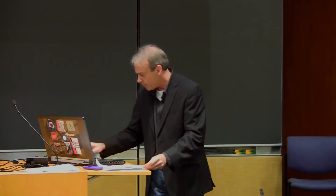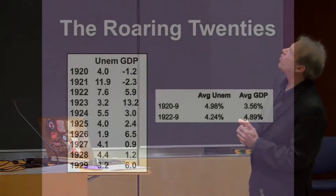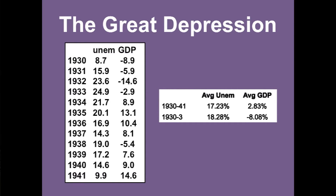Let me put this in a historical context. I asked my students what was different between the 20s — the Roaring 20s. The first two years were recessionary, but after that we've got 4.24% unemployment and an average rate of GDP growth of 4.89%. Then look what happens next: an average unemployment rate from 1930 to 1941 of 17.23% — higher than the previous 4.98% — and average GDP growth the first three years when the recession really hit of negative 8%.